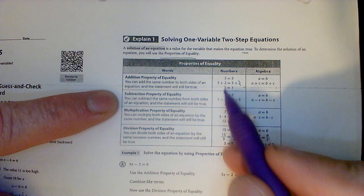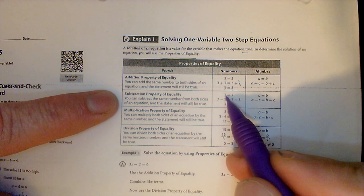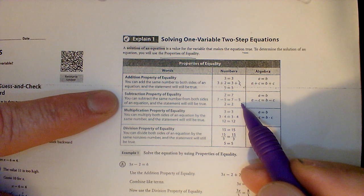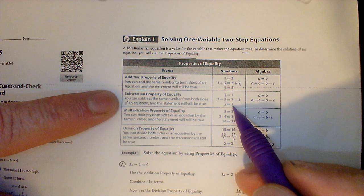Subtraction just says, you know what, we can't just add. We can subtract. If 7 equals 7, as long as I subtract 5 from both sides, the final equation, 2 equals 2, is going to be true.